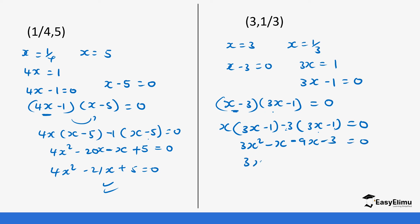So this is 3x squared minus 10x minus 3 equals 0, and they are done.